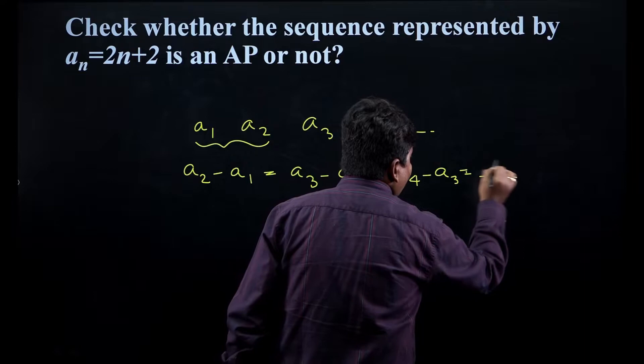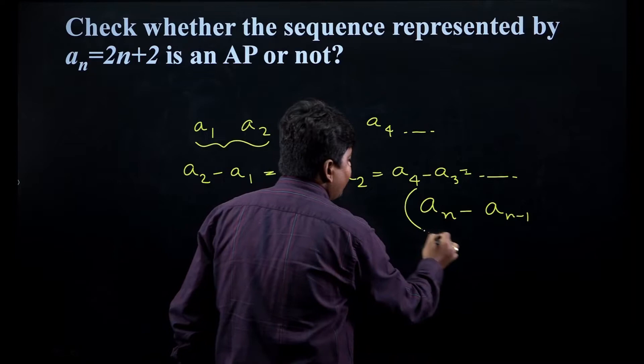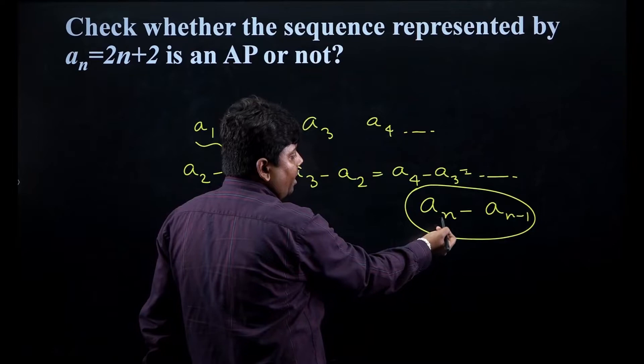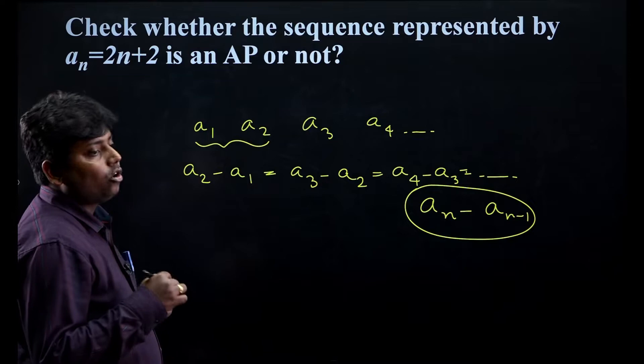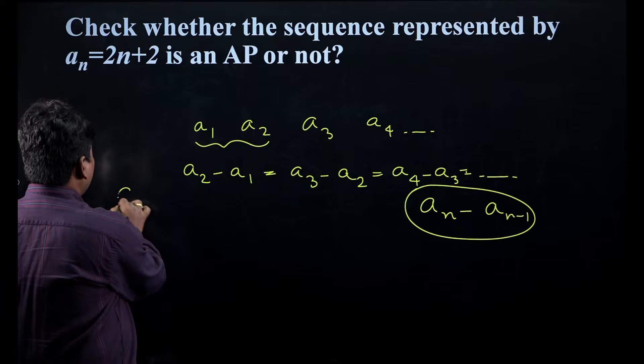So likewise, we can write a generalized term: aₙ minus aₙ₋₁. When the difference between aₙ and aₙ₋₁ is a constant, then we can conclude that the sequence is an arithmetic progression. We are already given aₙ, which is 2n + 2.